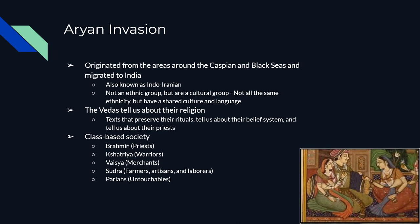At almost the same time — and this probably didn't help the Harappan society — there's this Aryan invasion. These people known as the Aryans start to migrate from the north, from an area that would today be like southern Russia, around the Caspian Sea and the Black Sea, around 1500 BC. If you've heard the word 'Aryan' before, you've probably heard it in terms of World War II and Nazis. It's important to know that these Aryans are not the same Aryans that the Nazis were talking about.